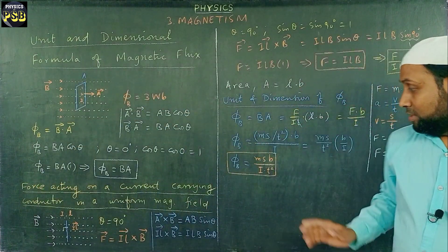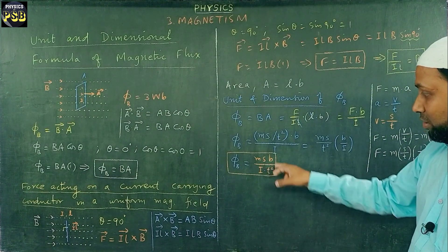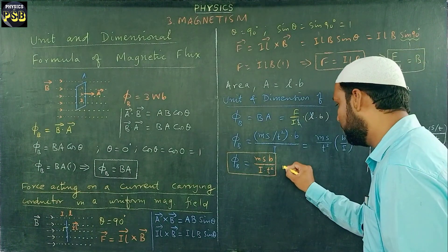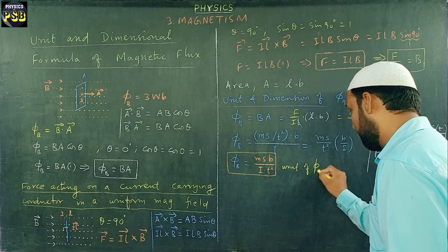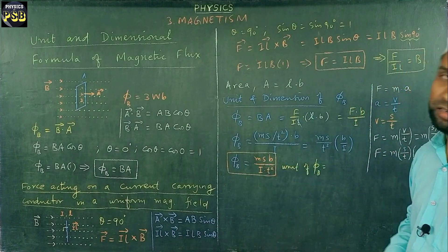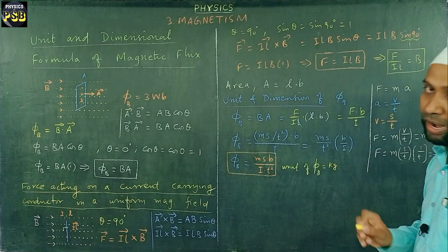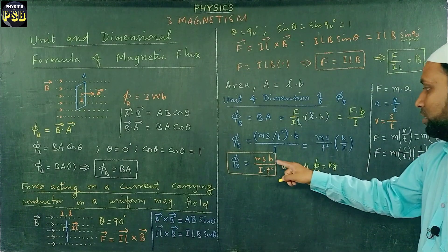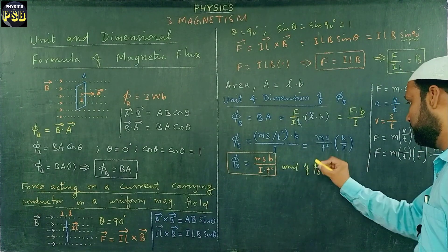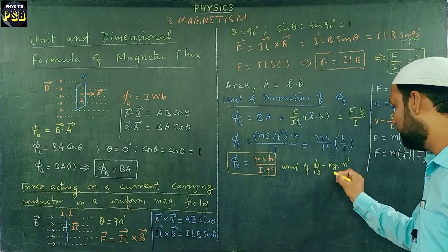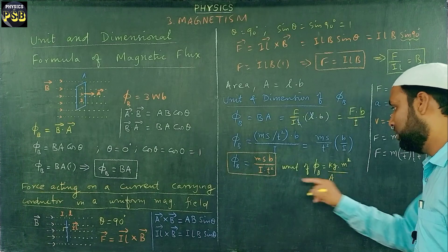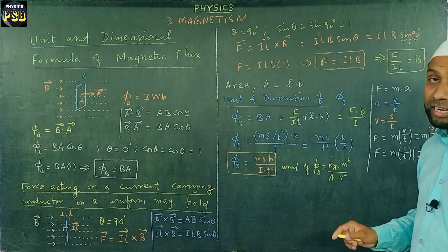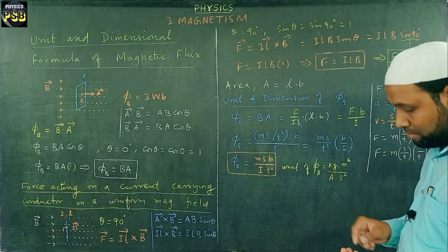Now what is the unit of Φ_B from this expression? For mass we have kilogram. For displacement we have meter. For breadth also we have meter, so meter squared. For current we have ampere, and for time we have second squared. So the alternate unit of magnetic flux is kilogram·meter²·ampere⁻¹·second⁻².